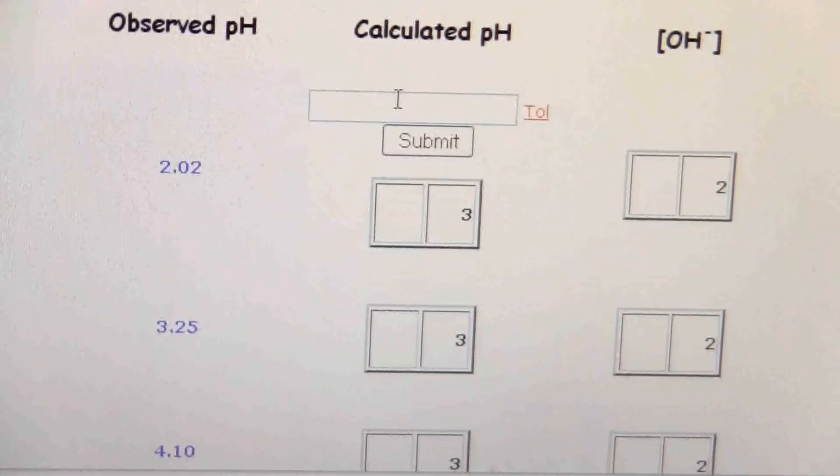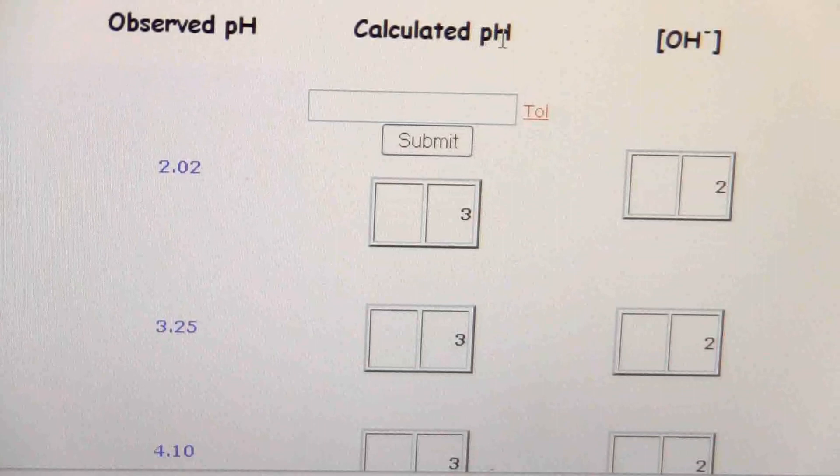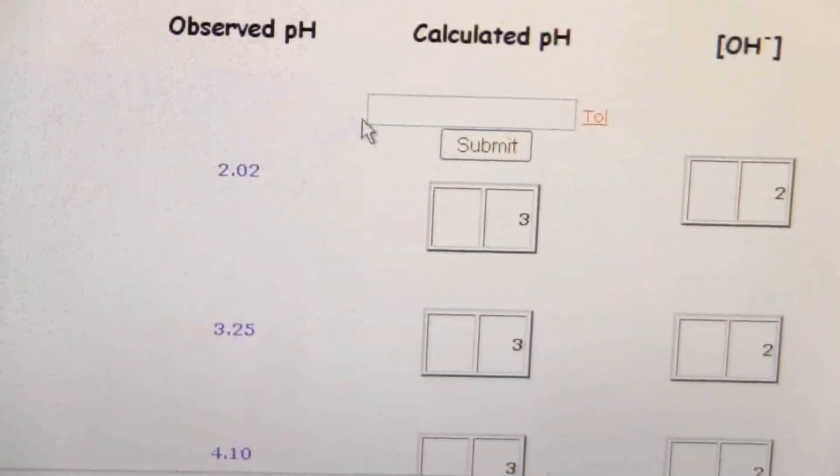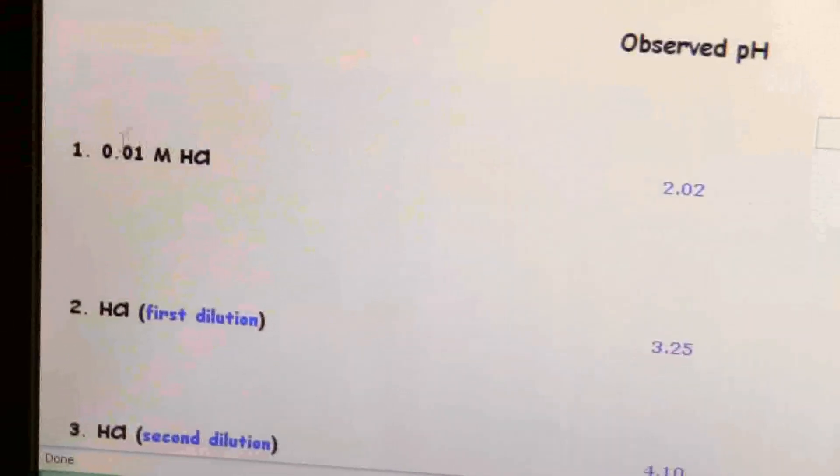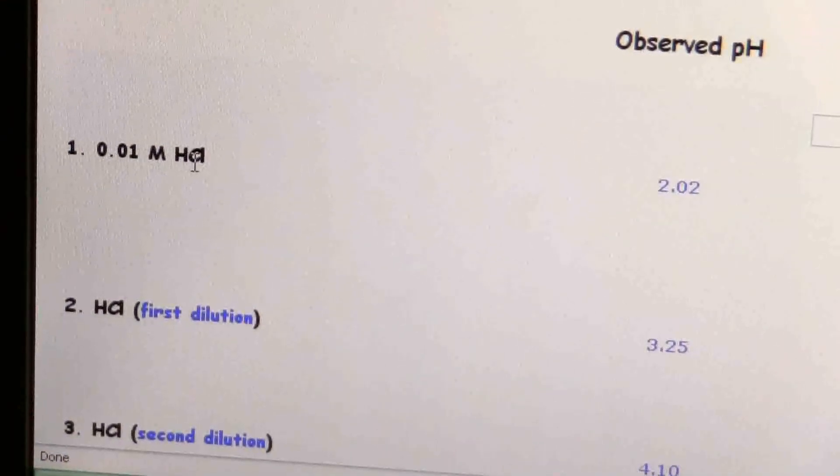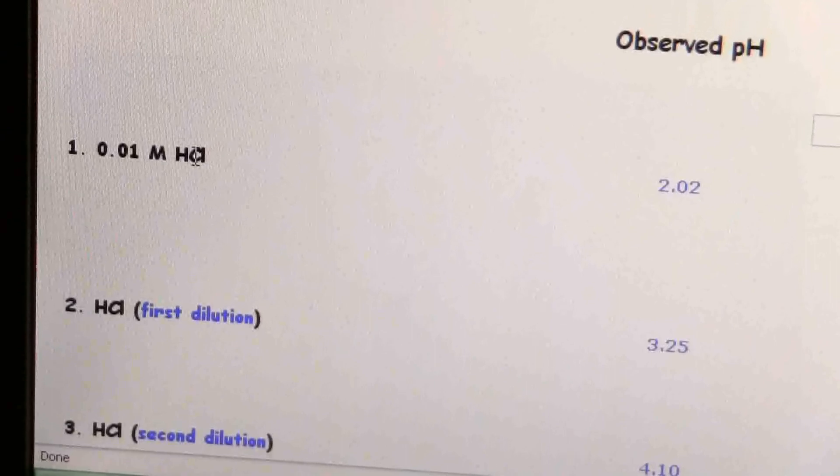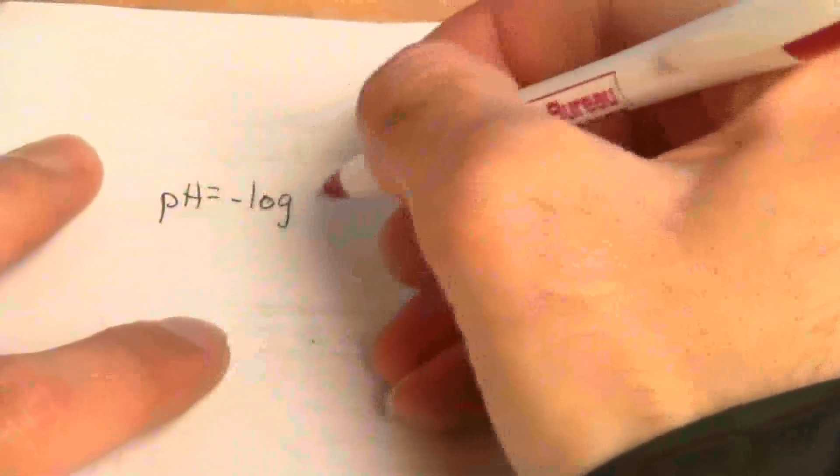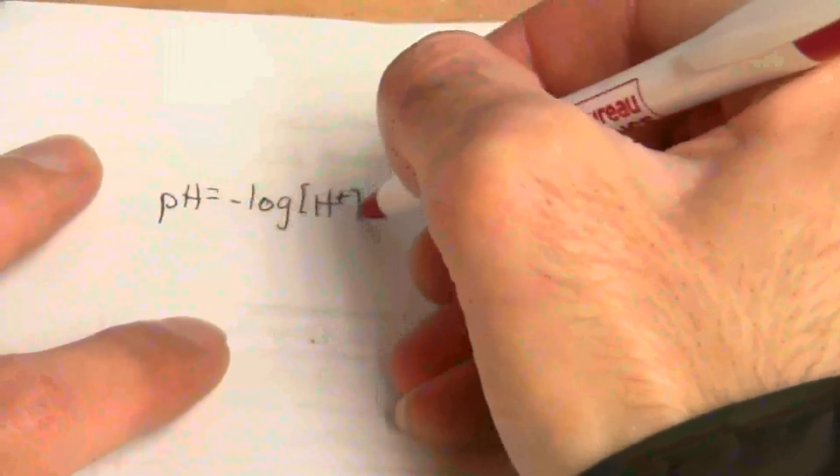So now for the calculation it says what is the calculated pH. This is what I observed but what would I calculate. So that's where we look at this 0.01 molar HCl and we want to calculate its pH. So let's just look at this and see what we get. So the equation for pH for calculating the pH is the negative log of the hydrogen ion concentration. That's something you'll want to have memorized.